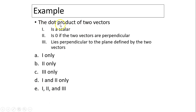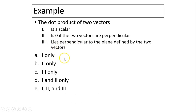The last example is a conceptual multiple-choice question about the dot product. Is it a scalar quantity? Is it 0 if two vectors are perpendicular? Does it lie perpendicular to the plane defined by the two vectors? Statement 1 is correct because the dot product is a scalar. Statement 2 is correct because cosine 90 equals 0. Statement 3 is false because a scalar has no direction and doesn't lie anywhere. The answer is 1 and 2 only. Thanks for watching, see you next time.